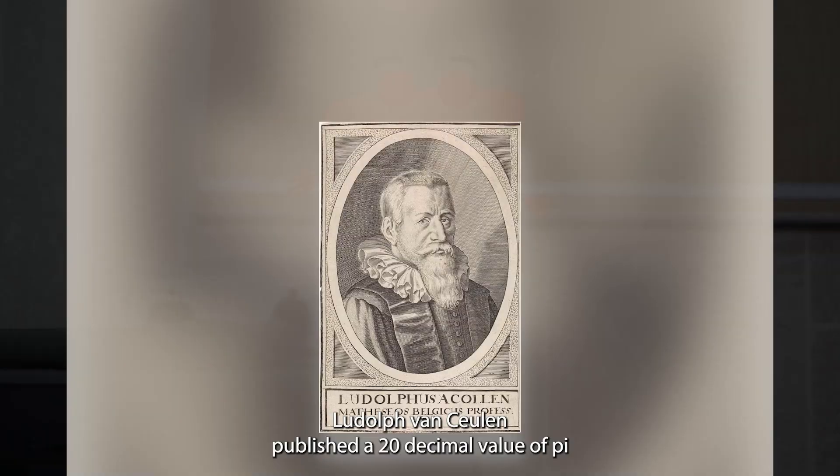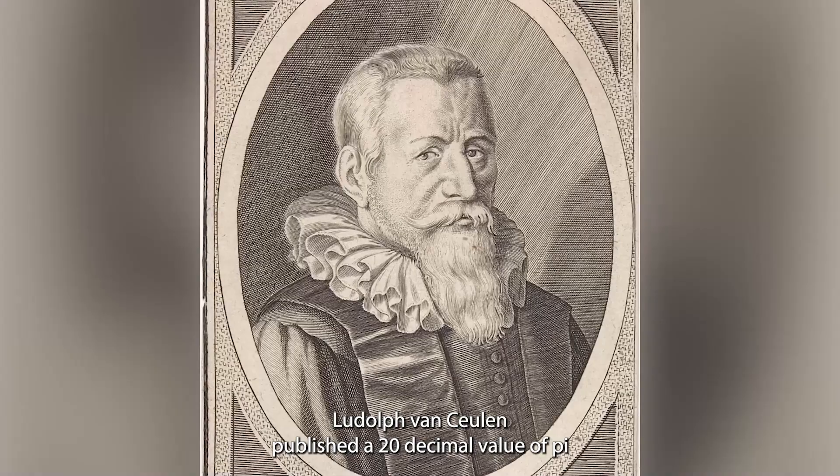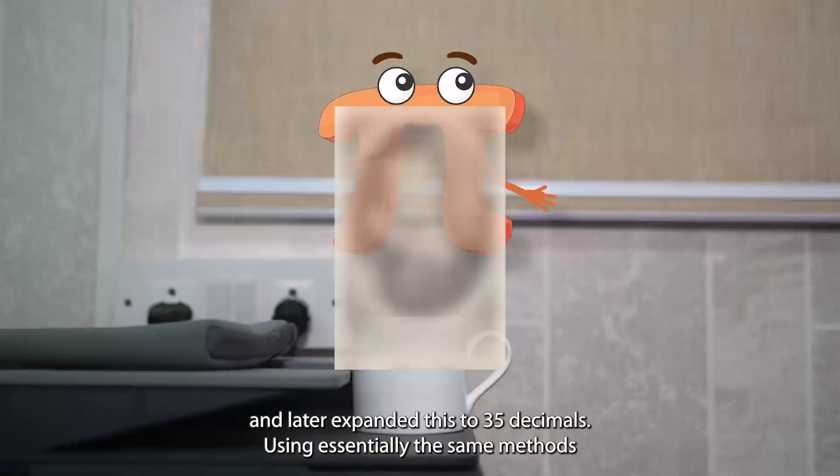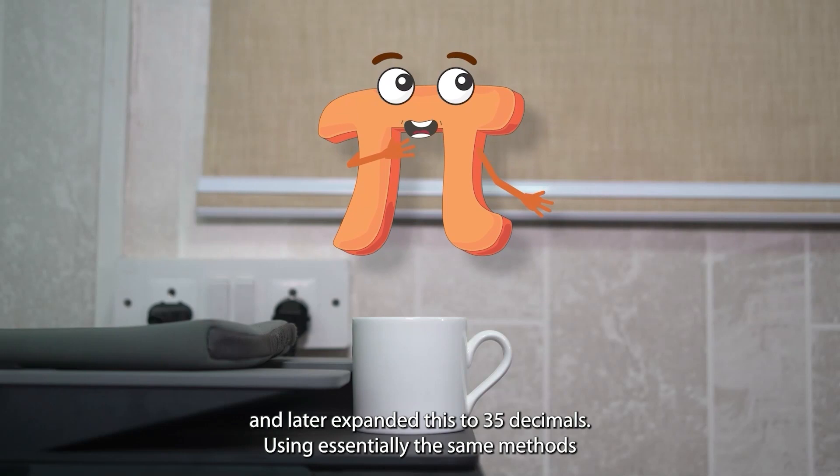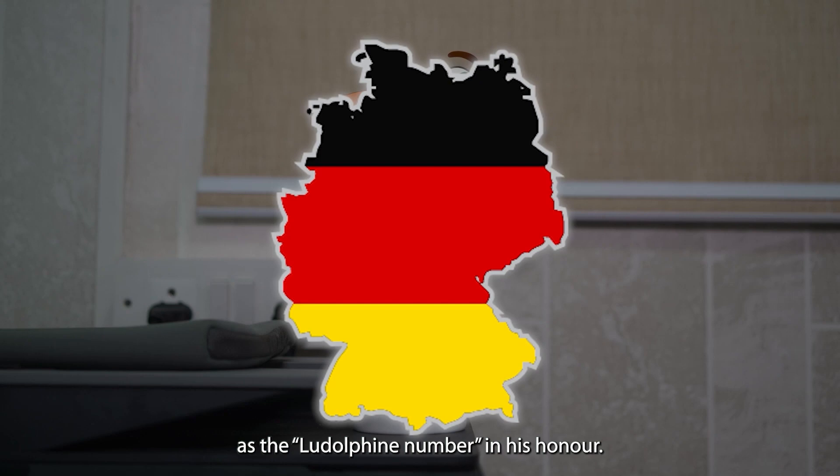Ludolf van Ceulen published a 20 decimal value of pi and later expanded this to 35 decimals using essentially the same methods as those employed by Archimedes some 1700 years earlier. In Germany, I am still sometimes referred to as the Ludolfine number in his honor.